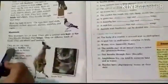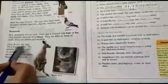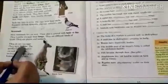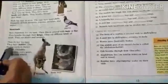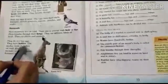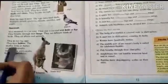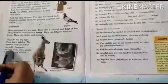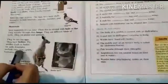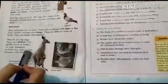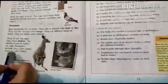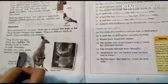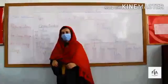Most mammals live on land and their skin is covered with hair or fur. They breathe through their lungs and eat different kinds of foods — both plants and animals. They do not lay eggs; they have babies, and the mother feeds her babies on milk.